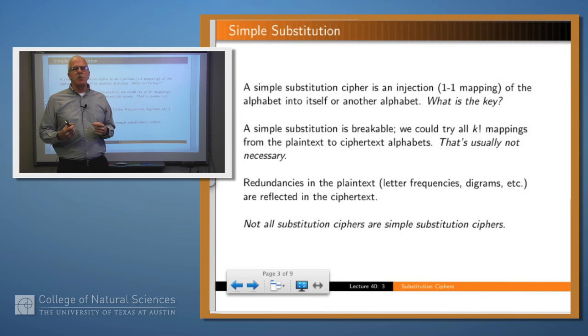So a simple substitution cipher is just a mapping from one alphabet to another alphabet. And so what is the key? Well, it's just however you specify that mapping. So it might be a table that tells you, you know, map A to X and B to Y and so on. Clearly a simple substitution like this is breakable because there are only a finite number of such tables, assuming that you know the alphabets.